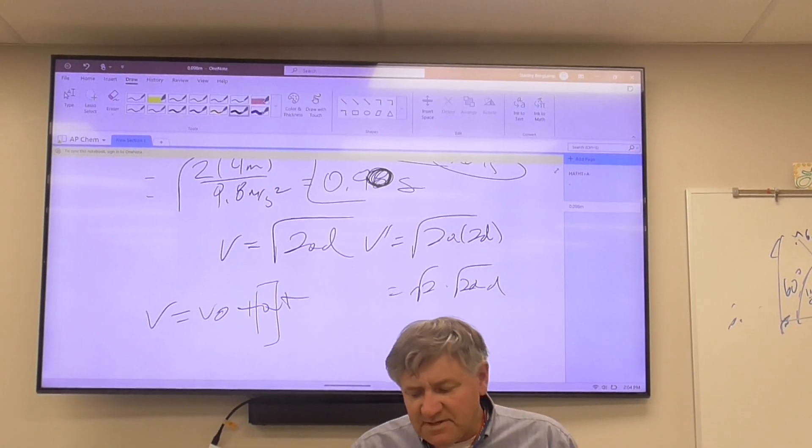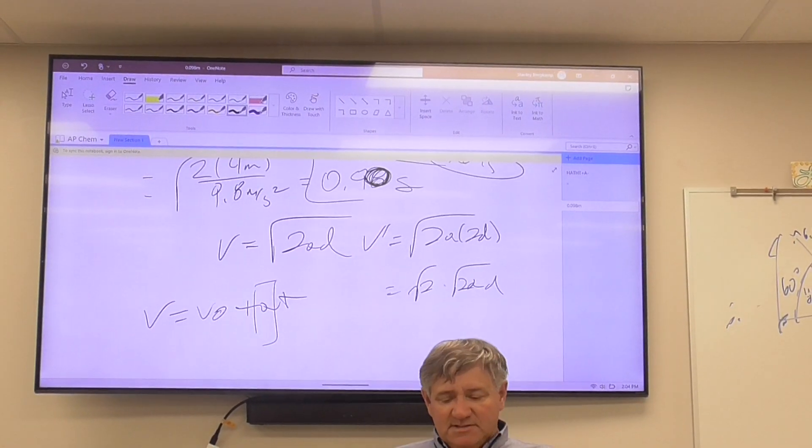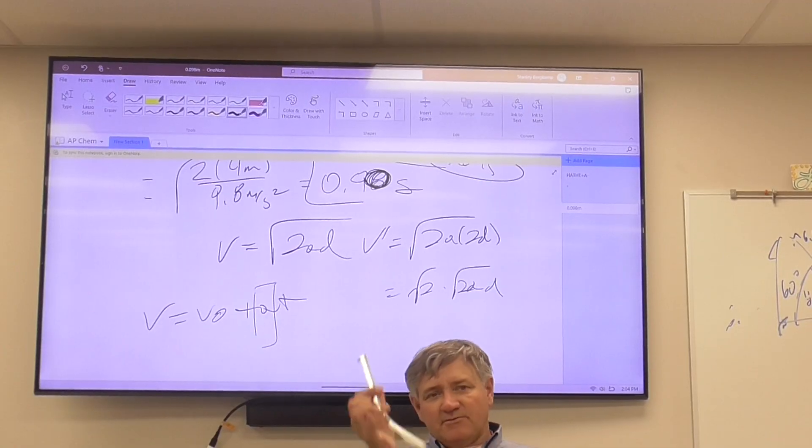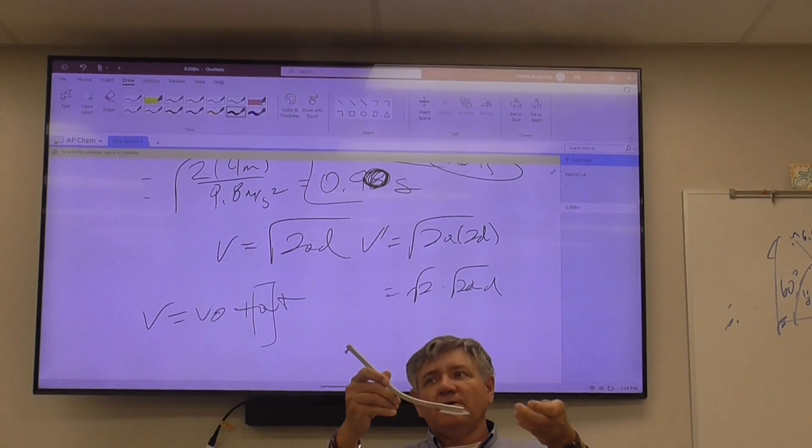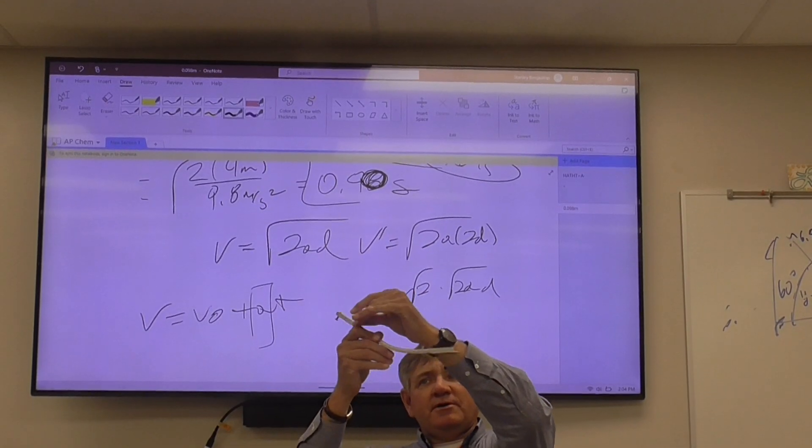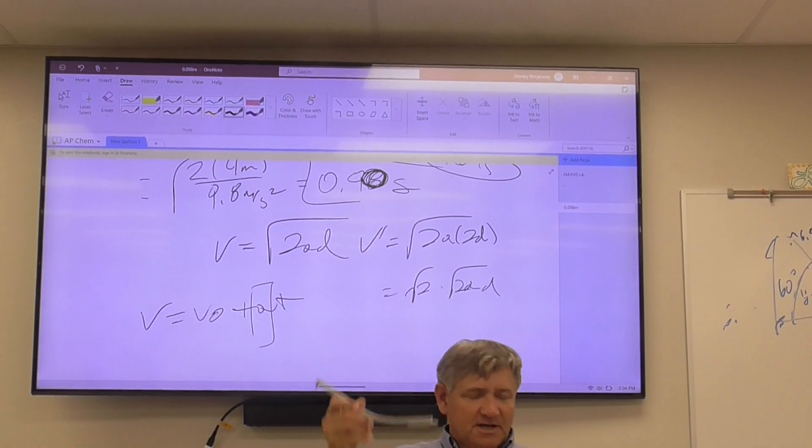All right, so in terms of collecting the data, it's going to be fairly simple. You're going to take a ramp like this, take a C-clamp and clamp that down at the table, hold a marble up here, let it roll down, this is going to turn into a projectile.